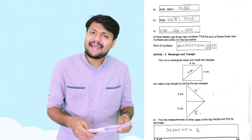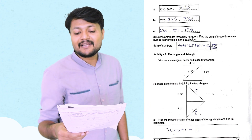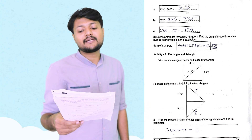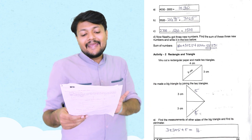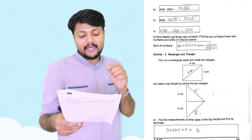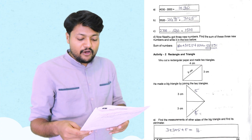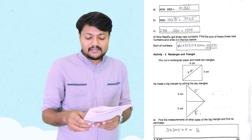I will get rectangle and triangle. We cut a rectangle paper and made two triangles. He made a big triangle by joining the two triangles. Find the measurement of other sides of the big triangle and find its perimeter.